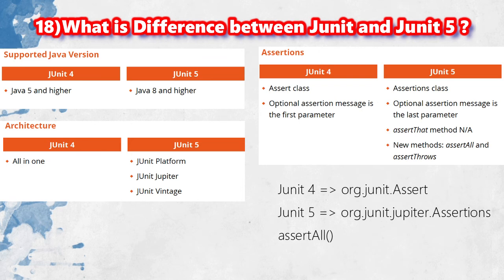Coming to the assertion aspect: in JUnit 4, we have org.junit.Assert — this package contains all assert methods, including assertThrows and assertAll. In JUnit 5, the assert package is updated, and assertAll method allows different types of assert methods to be used in a single method call, which is an experimental but useful feature.